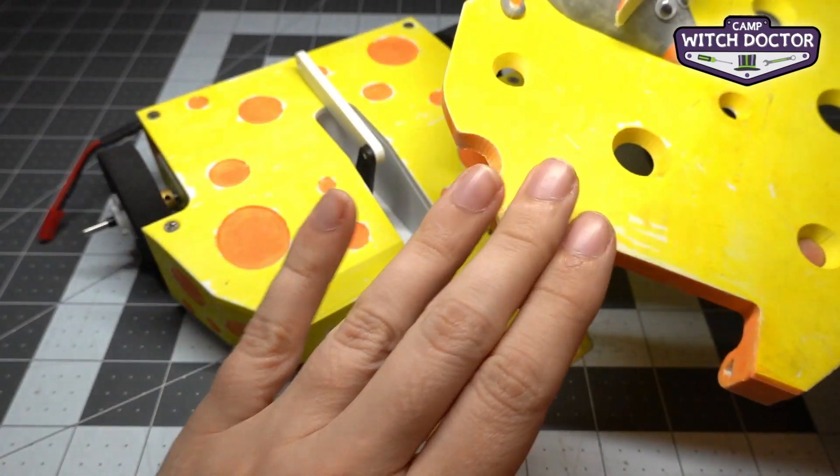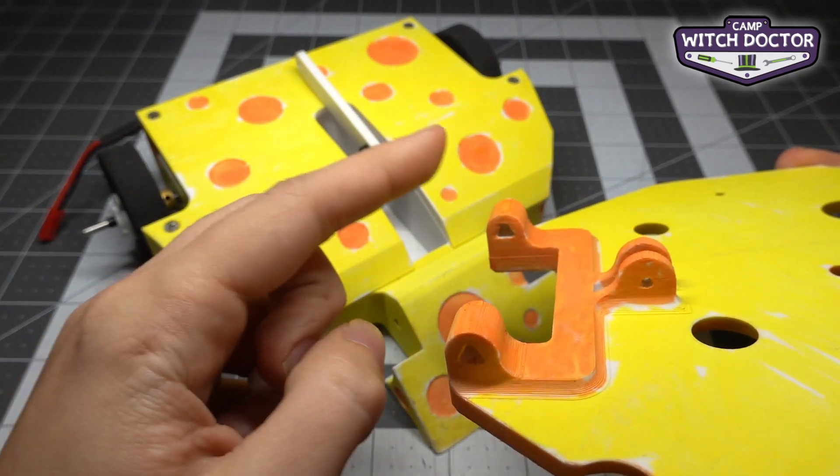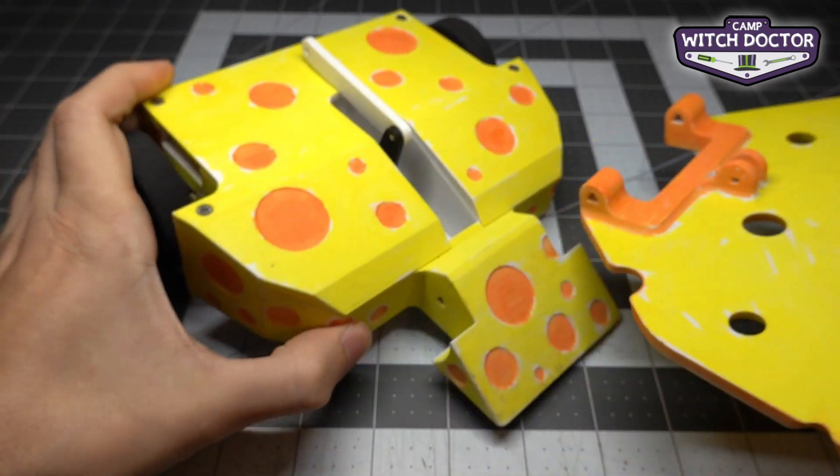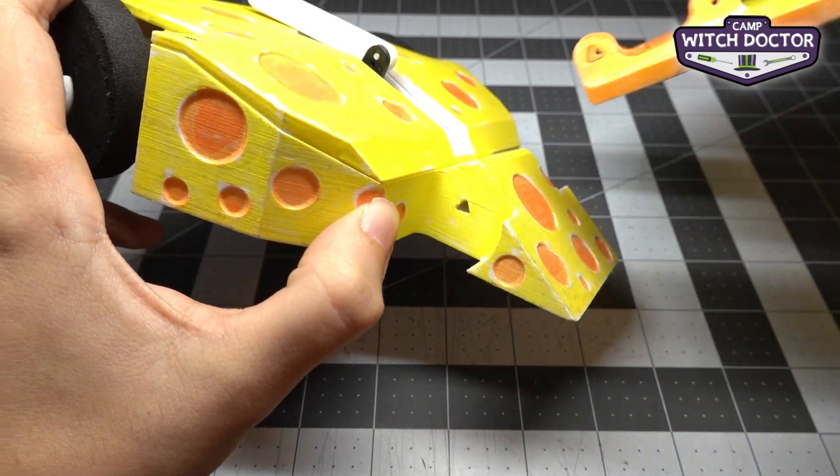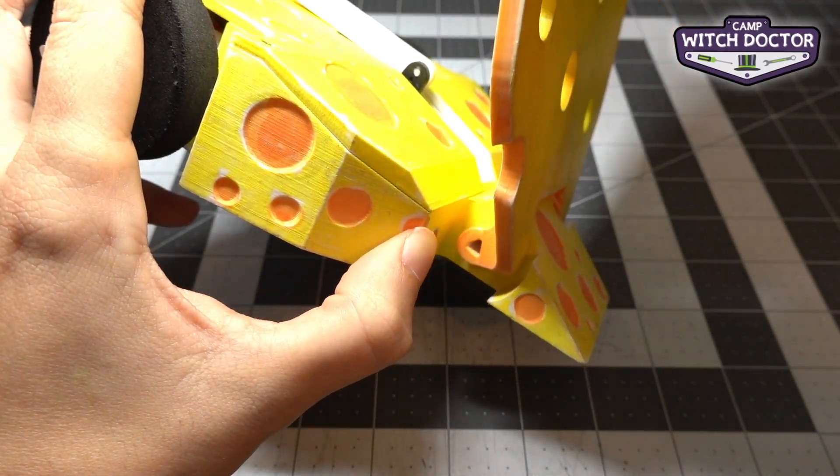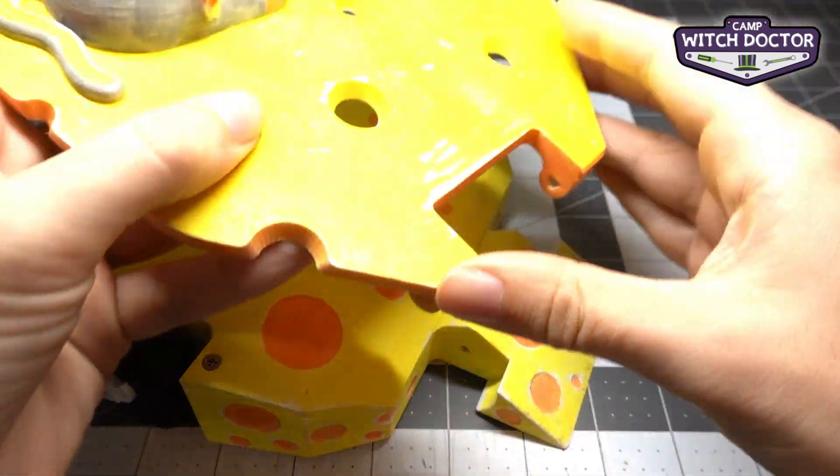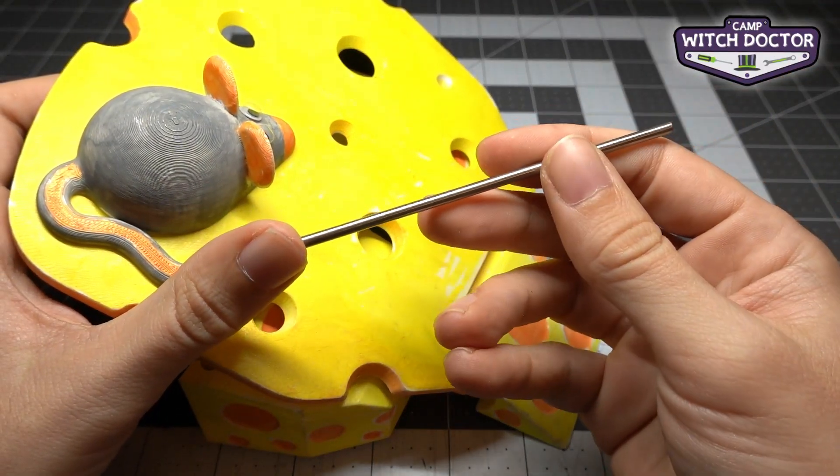Now let's put the flipper arm onto your robot. You'll see that the flipper arm has these triangle holes here that match these triangle holes right here on the chassis. So you're going to align those and then we're going to put the shaft through them. We're going to attach it using the longer shaft that came with your kit.